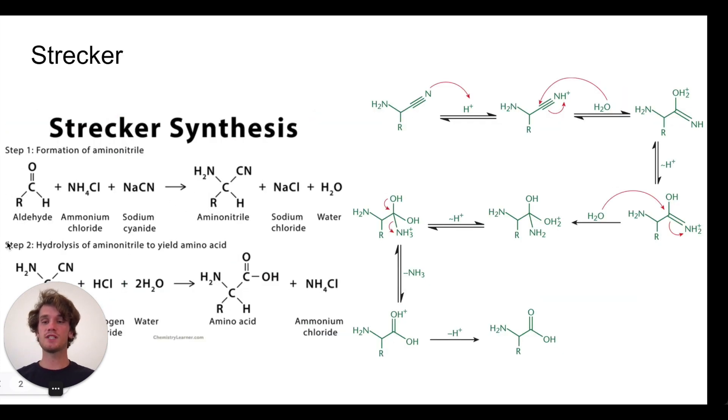In the Strecker synthesis, we start with an aldehyde. And this aldehyde is going to be attached to the R group that we need for our amino acid. In the end, it goes through a complicated mechanism that involves cyanide. That's about as much as you need to know. And it ends up forming our amino acid, again, with the same R group.